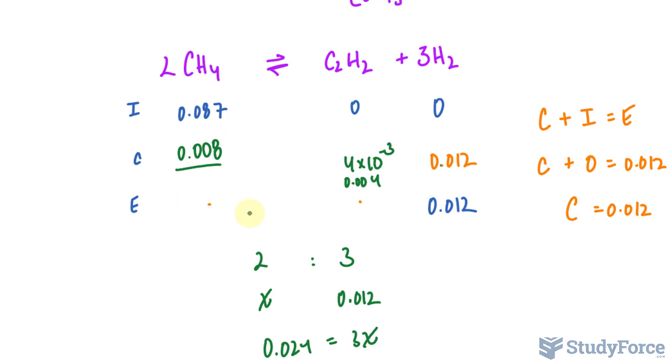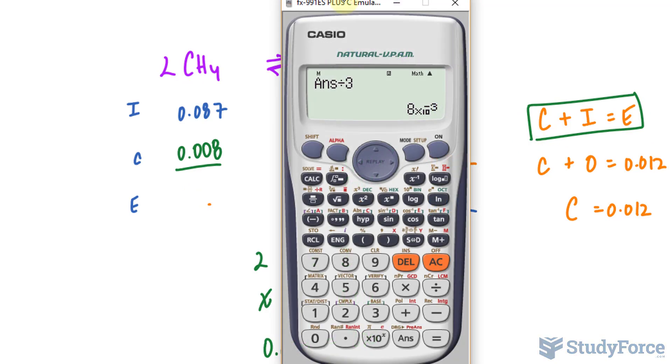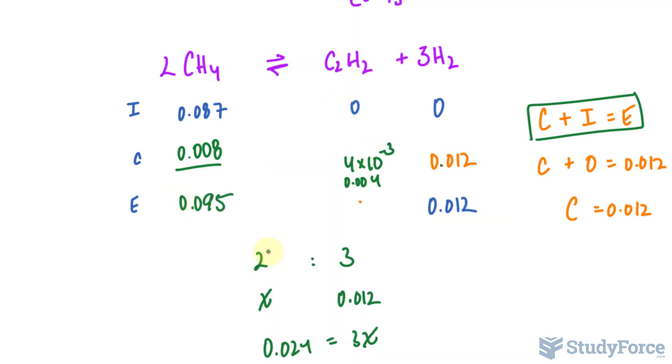So this number right here is 0.008. We can find out the equilibrium concentrations for this molecule and this molecule using this formula again: C plus I, 0.008 plus 0.087 gives us 0.095. Over here, if we add up this number and that number, well, it's going to be the same, 0.004.